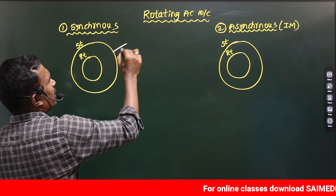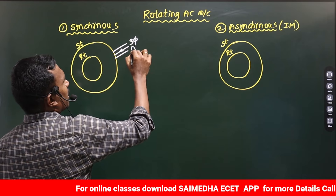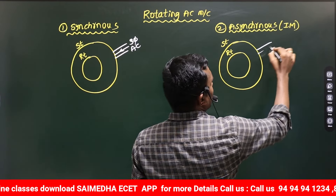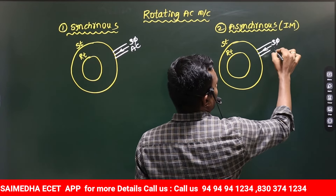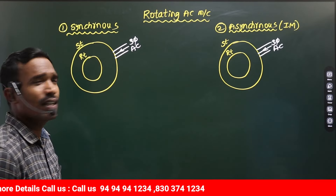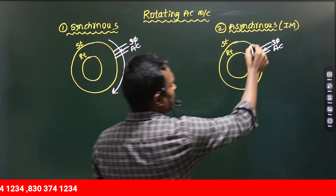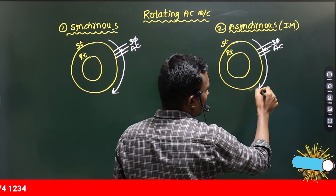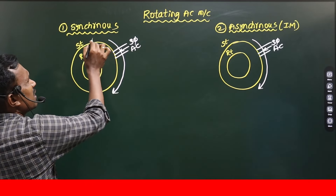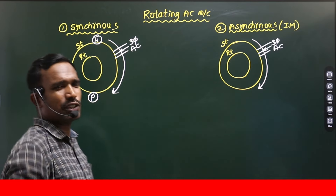For the Synchronous motor, we need to give 3-phase AC supply. The 3-phase AC supply is given to the stator. When the 3-phase AC supply is given to the stator, immediately a magnetic field will be produced in the 3-phase winding. This magnetic field is nothing but the formation of poles. For example, in a 2-pole machine: North pole, South pole.